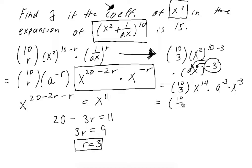So we have 10 choose 3... Whoops. 10 choose 3, it's not 10 over 3, 10 choose 3, times a to the negative 3, times x to the 14 minus 3, which is just going to give us x to the 11th. And we're interested in the coefficient of x to 11, which we're given to be 15. So we can set this equal to 15, this part here, since this is the coefficient of the x to the 11th term.